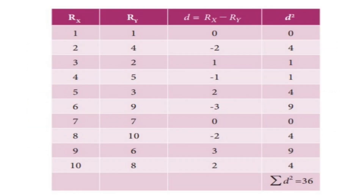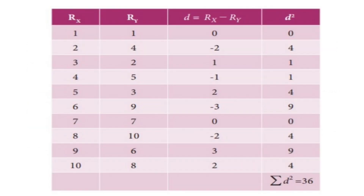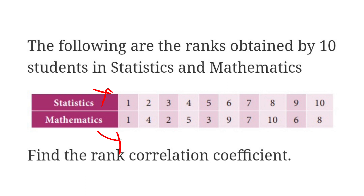Marks obtained in statistics are taken as X and marks obtained in mathematics as Y. So Rank X (RX) represents ranks scored in statistics: 1, 2, 3, 4, 5, 6, 7, 8, 9, 10. Rank Y (RY) represents ranks scored in mathematics: 1, 4, 2, 5, 3, 9, 7, 10, 6, 8. These values are taken directly from the given data.